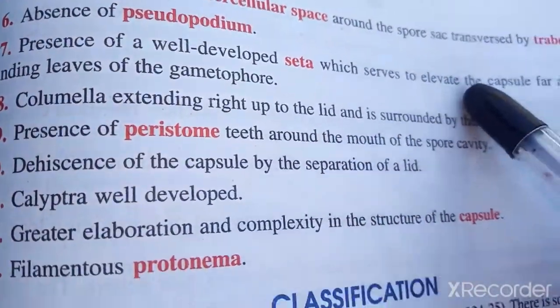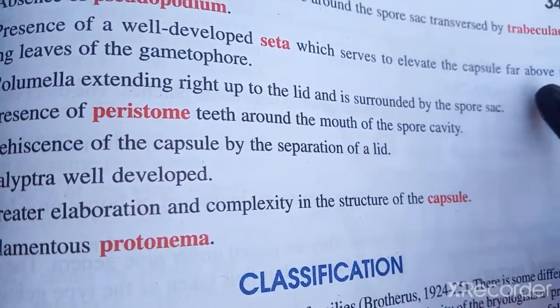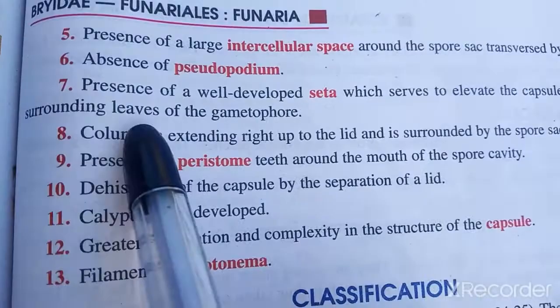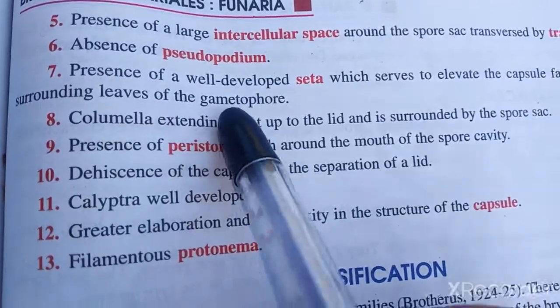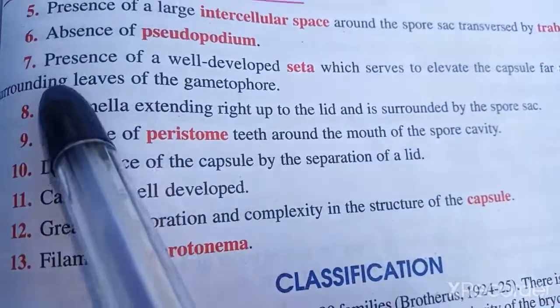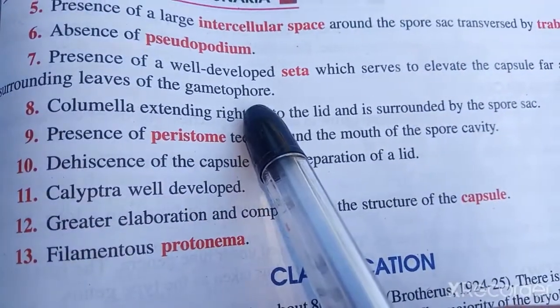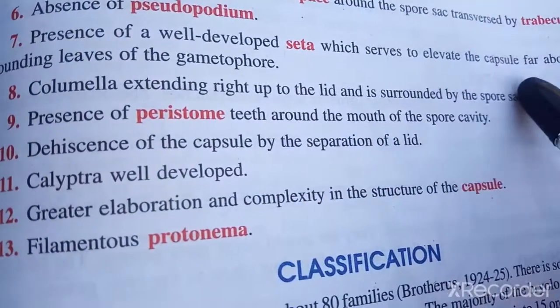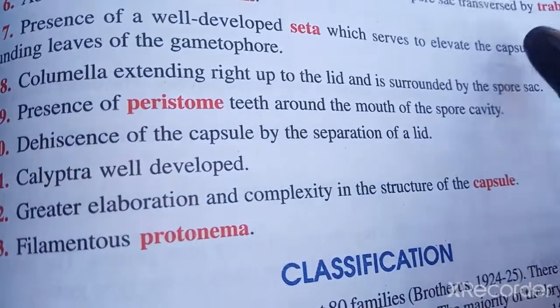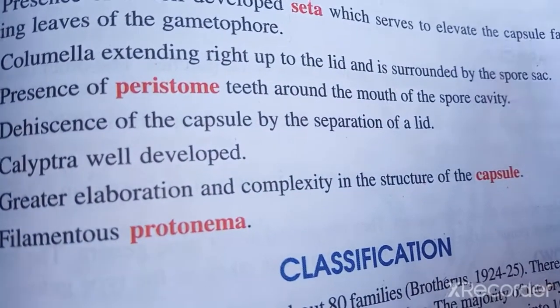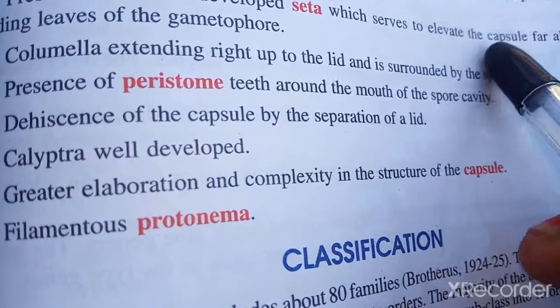The capsule is elevated above the surrounding leaves of the gametophores. The capsule is formed from the egg, which becomes the zygote, and then the embryo.